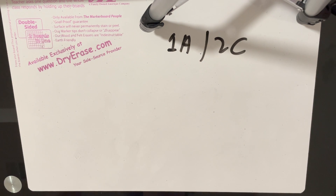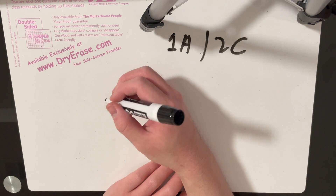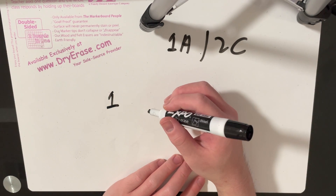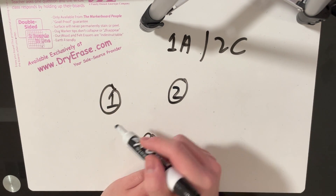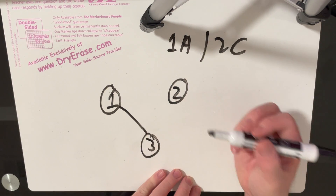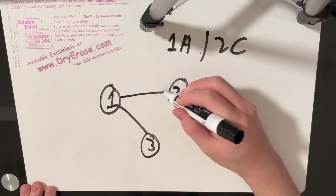The first thing to notice is that we can represent the problem as a graph, because it describes a friendship between nobles A and B — we can think of it as a friendship between node A and node B. For example, if we have nobles 1, 2, and 3, and there's a friendship between person 1 and person 3, we draw an edge from node 1 to node 3. Similarly, if there's a friendship from person 1 to person 2, we draw an edge between node 1 and node 2.